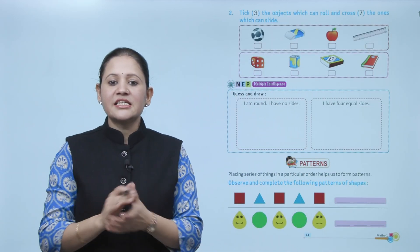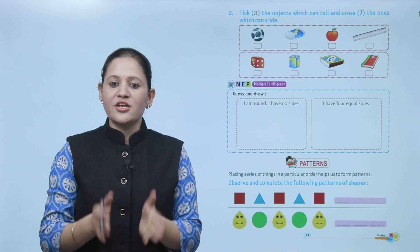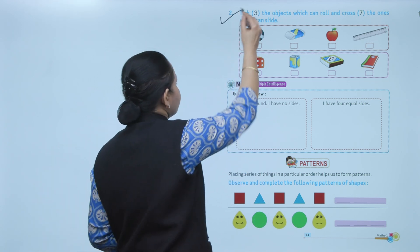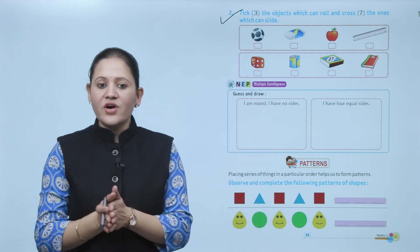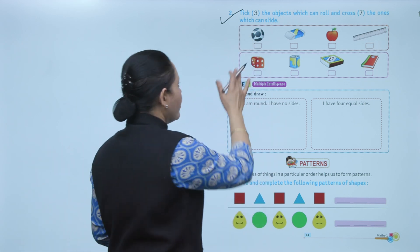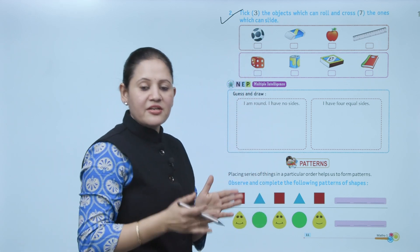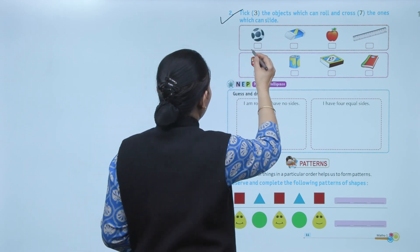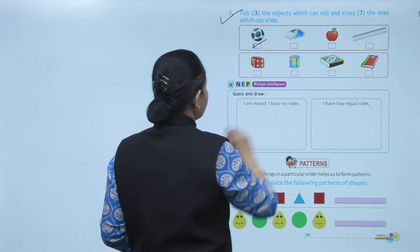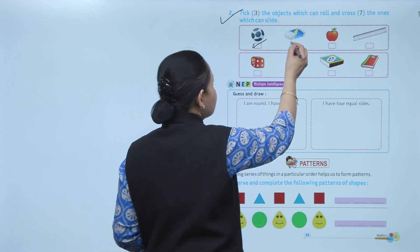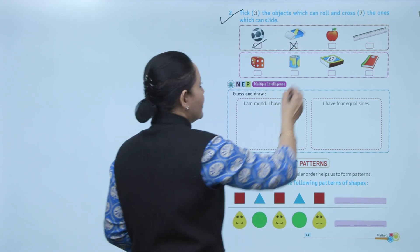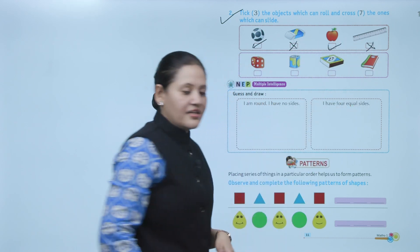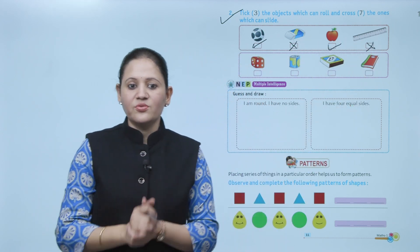Next: take the object which can roll and cross the ones which can slide. First is a ball — a ball is a circular shape, so it will roll. Objects with flat surfaces will slide, so we cross them. It will roll and it will slide — like this we'll do the activity.